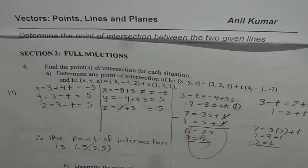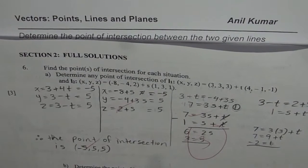Let us discuss point of intersection now between lines and planes. Here is question number six. It says, find the points of intersection for each situation. In part A, we are given equation of two lines.